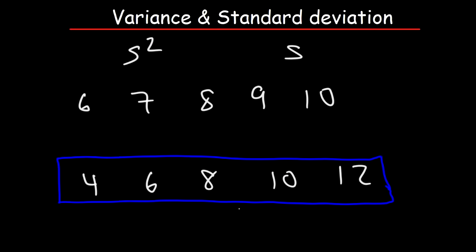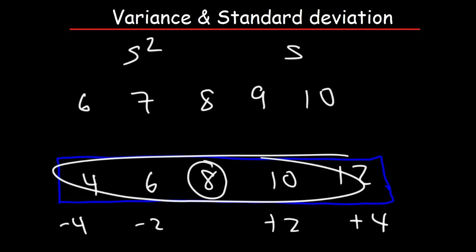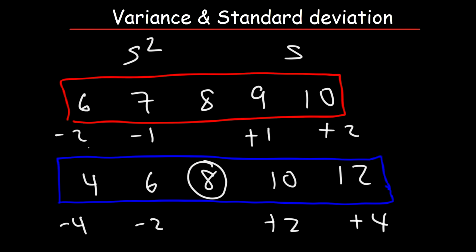As you can see, the first number 10 is 2 units away from the mean 8, and the second number 12 is 4 units away. So there's plus 2, plus 4, minus 2, minus 4 — more deviations from the mean. Therefore the standard deviation and variance will be higher for the second list. For the first list, the deviations from the mean will be plus 1, plus 2 on the right side and minus 1, minus 2 on the left. So the standard deviation and variance tell us the spread of the data — how far the data is from the mean.